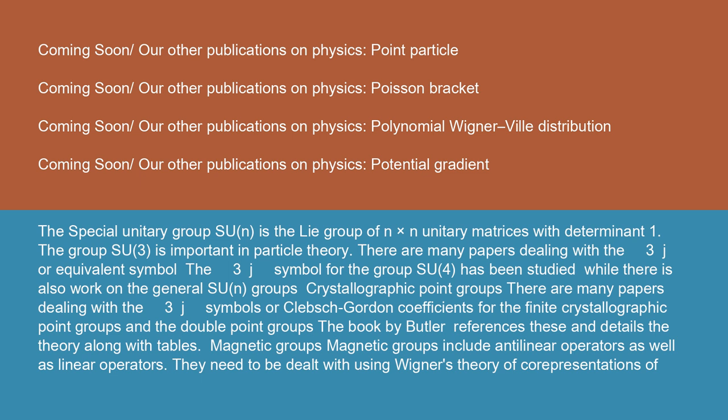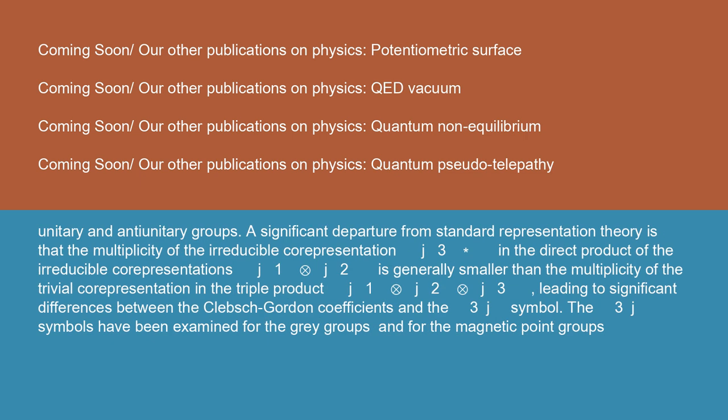Magnetic groups: magnetic groups include anti-linear operators as well as linear operators. They need to be dealt with using Wigner's theory of co-representations of unitary and anti-unitary groups. A significant departure from standard representation theory is that the multiplicity of the irreducible co-representation J3* in the direct product of the irreducible co-representations J1 ⊗ J2 is generally smaller than the multiplicity of the trivial co-representation in the triple product J1 ⊗ J2 ⊗ J3, leading to significant differences between the Clebsch-Gordon coefficients and the 3J symbol. The 3J symbols have been examined for the gray groups and for the magnetic point groups.